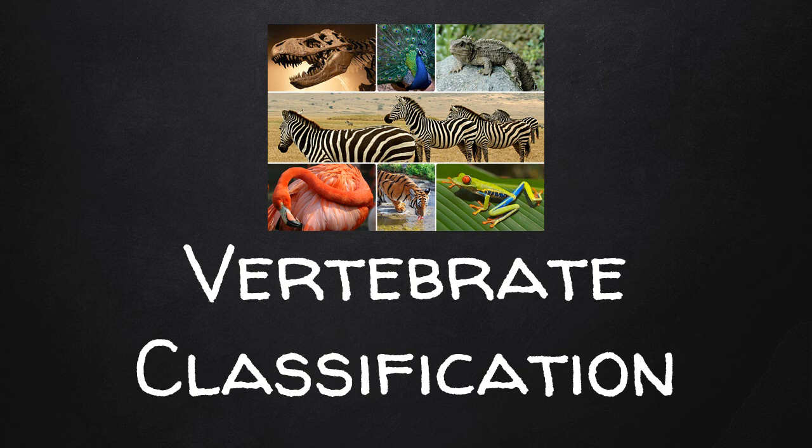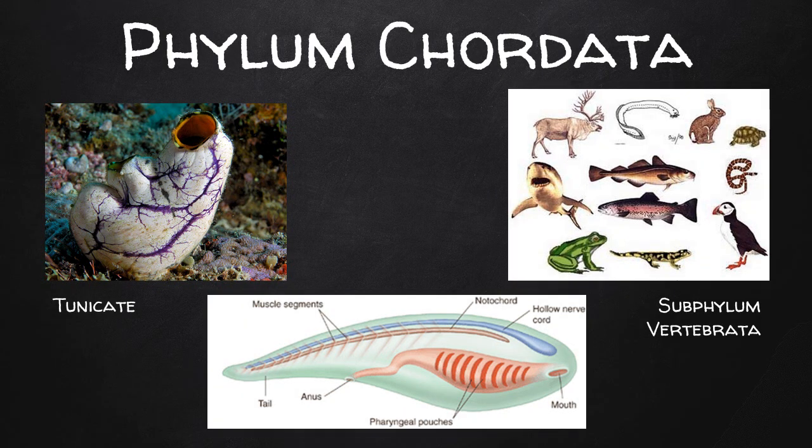Three percent of species on Earth are vertebrates. Most vertebrates have a backbone and an endoskeleton, or a skeleton on the inside of their body. Vertebrates are classified not in phylum Vertebrata, but in phylum Chordata. That's because of one exception: an animal called a tunicate, which is an invertebrate chordate — it has no vertebrae or backbone, but it is a chordate. A chordate is an animal with four characteristics as a developing embryo: a notochord, a nerve chord, a pharyngeal pouch, and a post-anal tail. There is a subphylum called Vertebrata that includes all vertebrates.